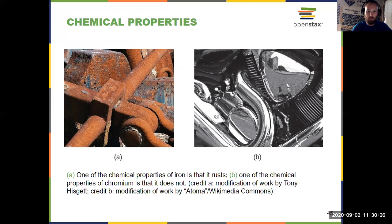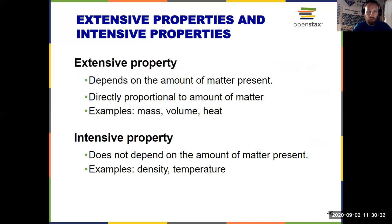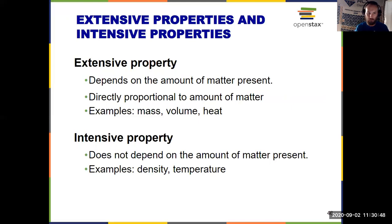We can use those physical and chemical properties to help identify properties of matter. This is where we finish section 1.3 with the last definition: extensive properties and intensive properties. We can use these types of properties to sort our elements into groups. An extensive property depends on the amount of matter present — if you change the amount of matter, you change the value of the property. Mass and volume are easy examples. Heat and temperature we'll talk about more in chapter five, and why one is extensive and one is intensive.